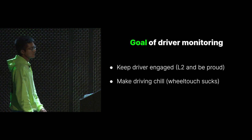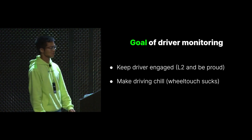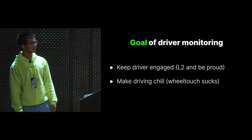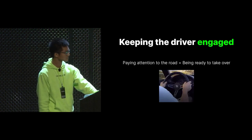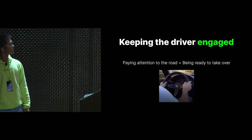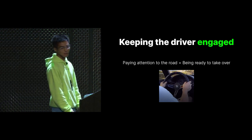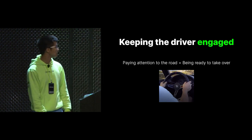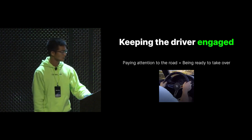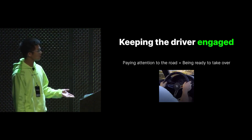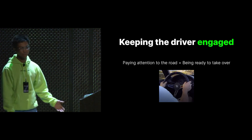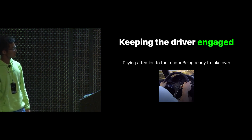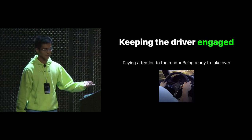And obviously, by using the camera only, driving becomes more chill because the driver doesn't need to touch the wheel every now and then when the system is engaged. When we say keeping the driver engaged, it means making sure the driver is always paying attention and always ready to take over. Some examples of not paying attention include being on your phone, falling asleep, or simply looking at the car console for too long.